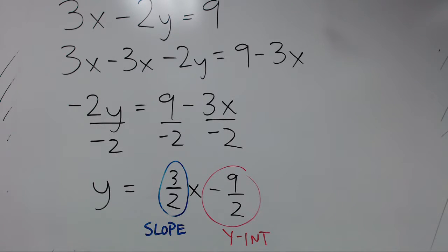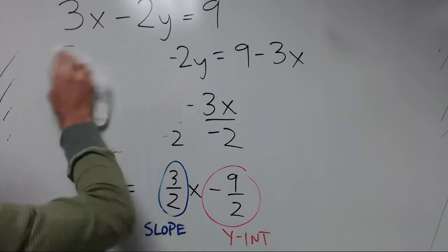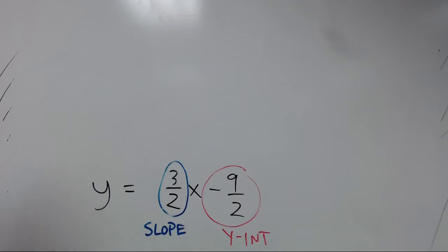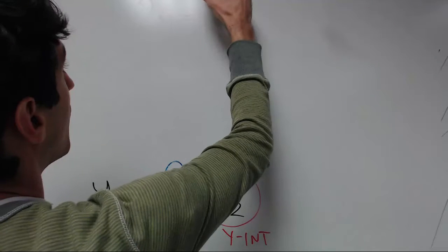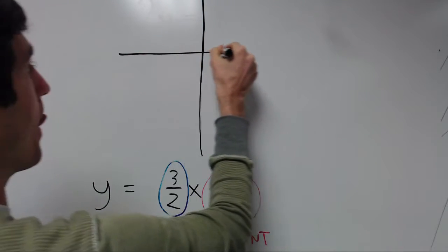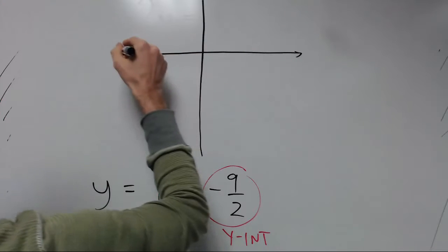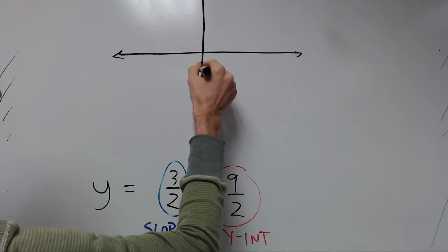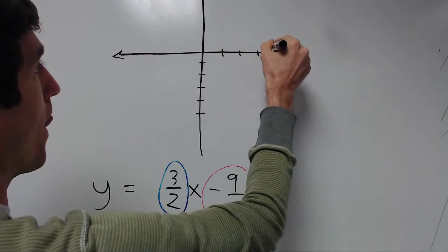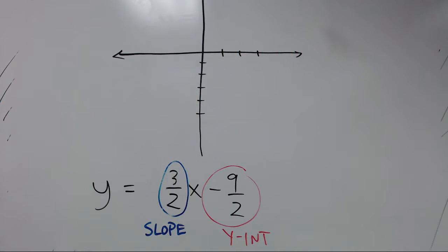Let's go ahead and get the graph now. So we don't have to label those tick marks unless we change them from the integers, from the 1, 2, 3, and so on.